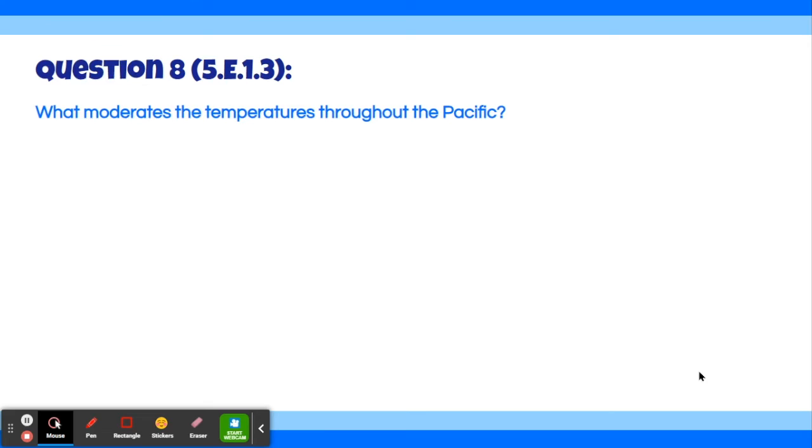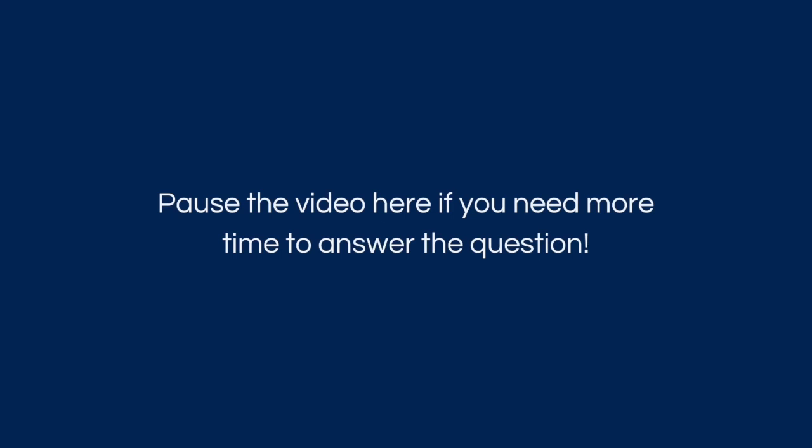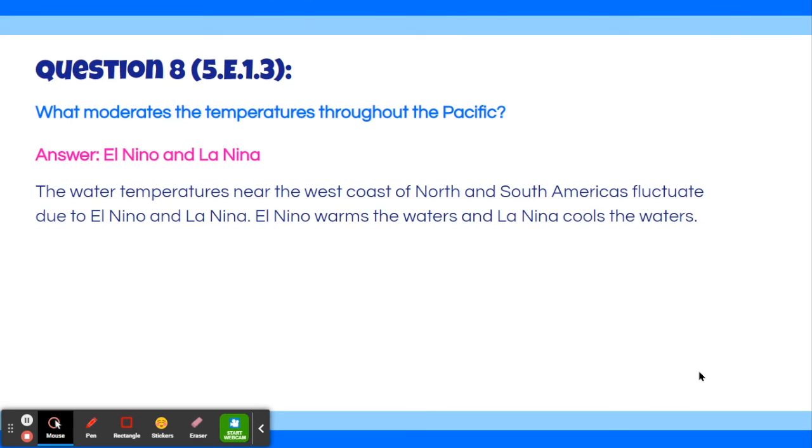Question number eight. What moderates the temperatures through the Pacific? The answer is El Nino and La Nina. The water temperatures near the west coast of North and South America fluctuate due to El Nino and La Nina. El Nino warms the waters and La Nina cools the waters.